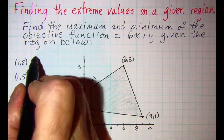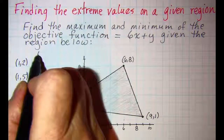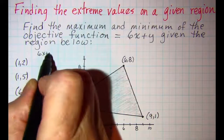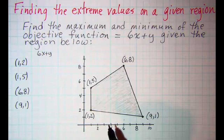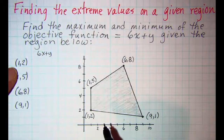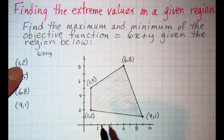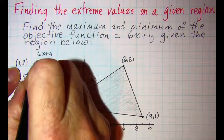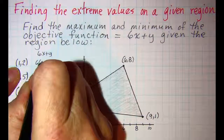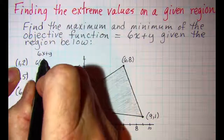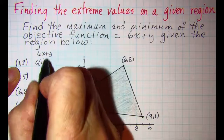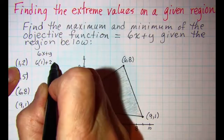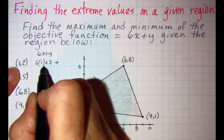For convenience I'm going to write my function up here at the top: 6x plus y. For my first point, coordinates 1, 2, I will have 6 times the x value which is 1, plus the y value which is 2, and I get 8.